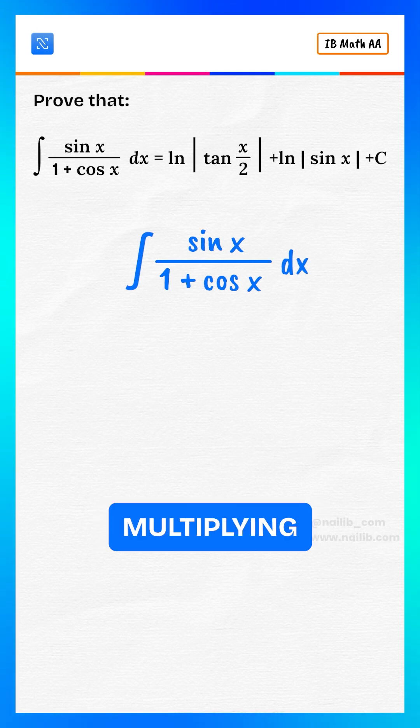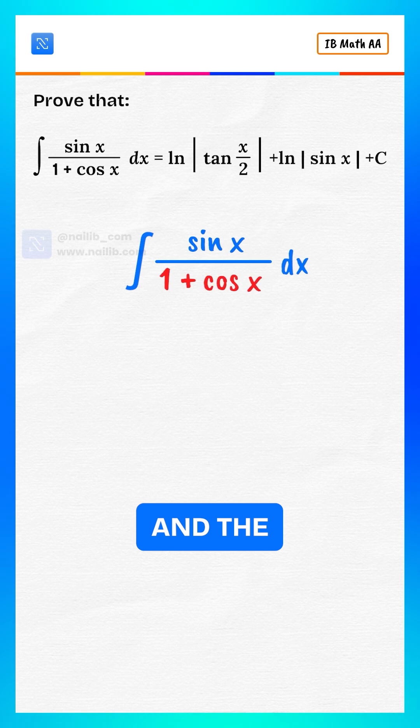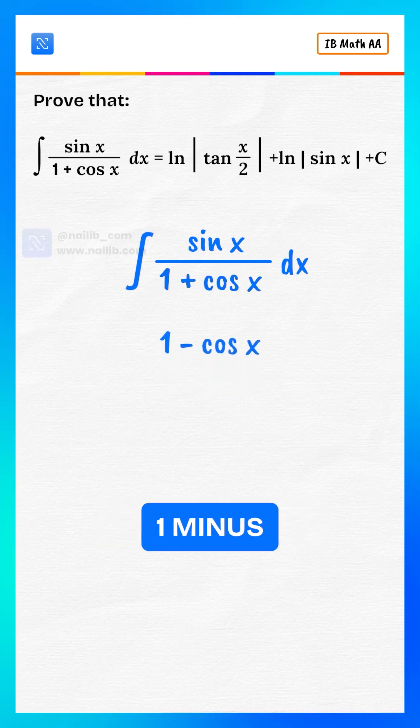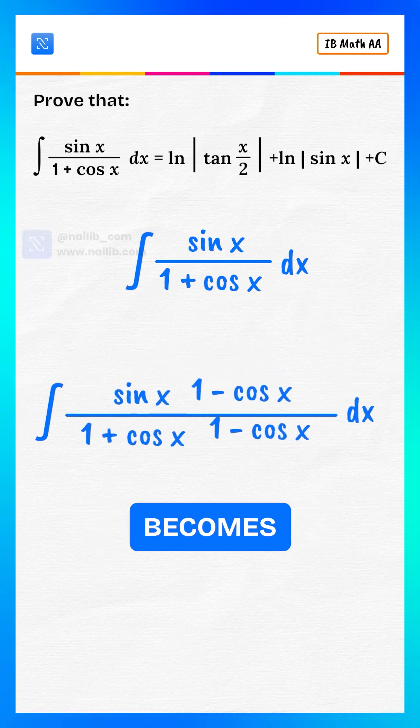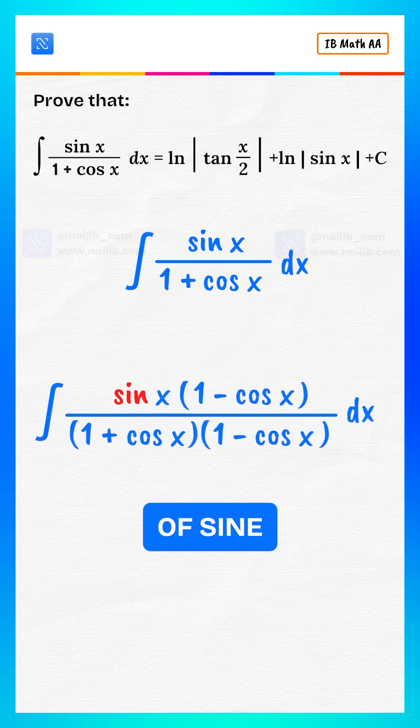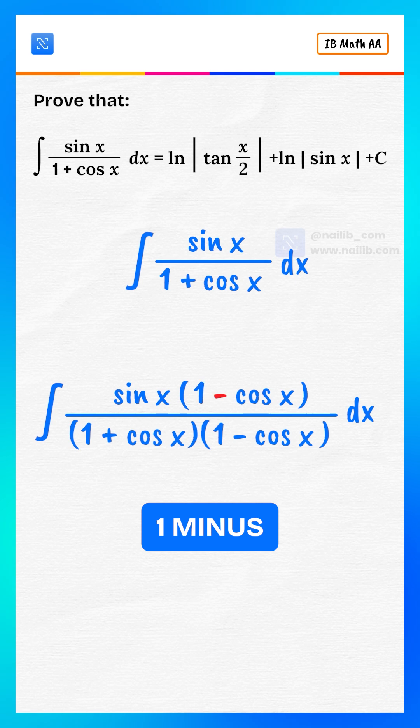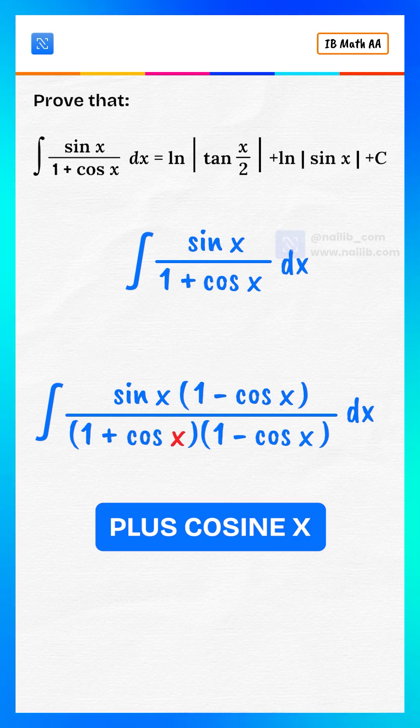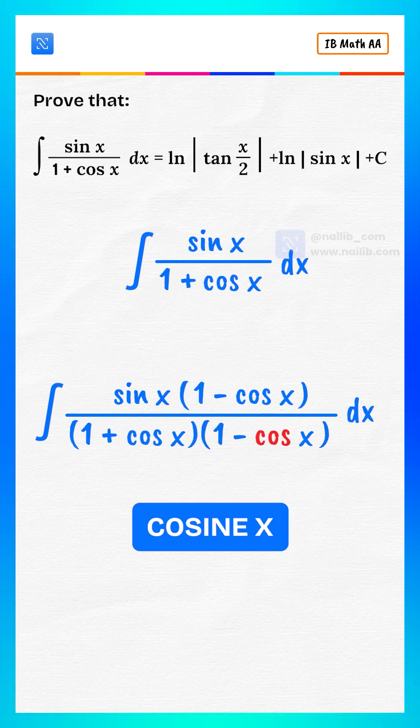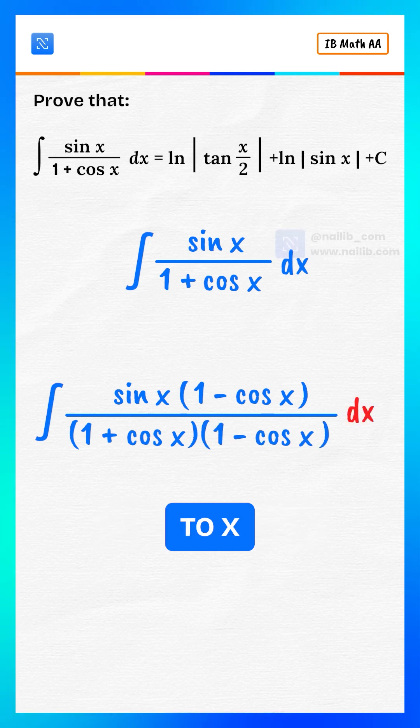We'll begin by multiplying both the numerator and the denominator by 1 minus cosine x. So the expression becomes the integral of sine x times 1 minus cosine x divided by 1 plus cosine x times 1 minus cosine x with respect to x.